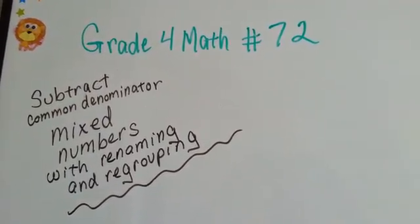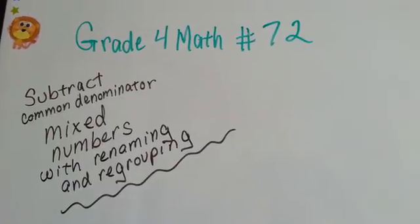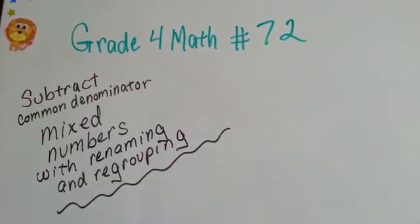Grade 4 math number 72. Subtract common denominator mixed numbers with renaming and regrouping.